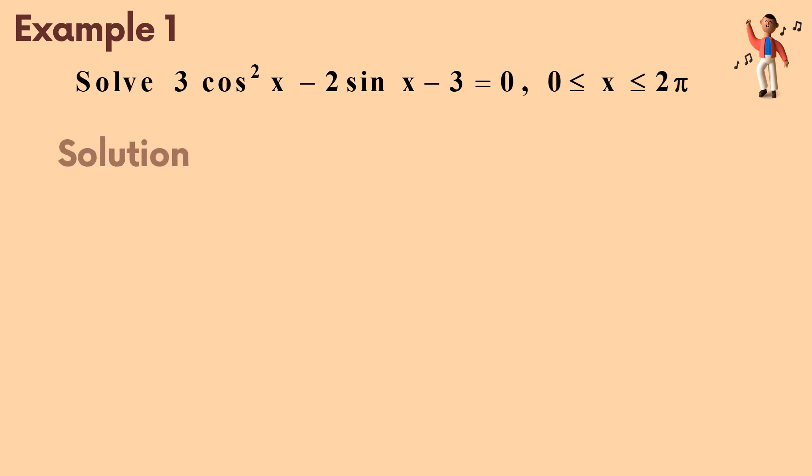For the solution, cos²x by using the formula can be written as 1 - sin²x. We have a new equation which is 3(1 - sin²x) - 2 sin x - 3 = 0.